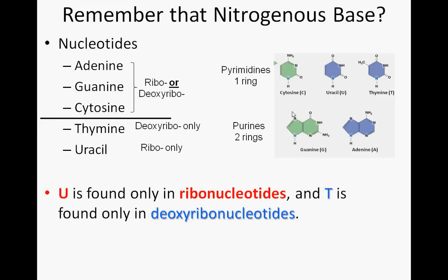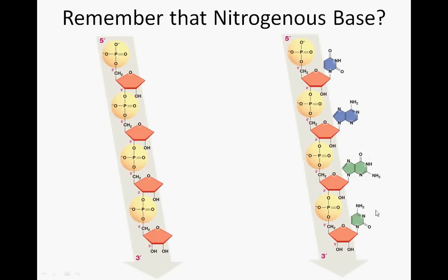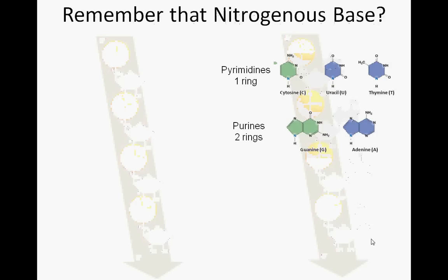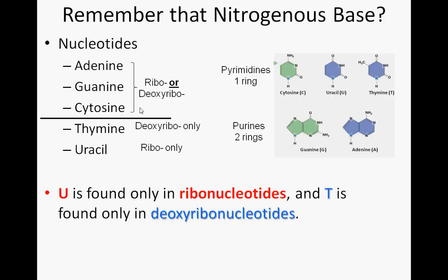Why are there three pyrimidines and two purines? Up on this slide we're seeing only four different things, and you may know that nucleic acids tend to be made up of four different bases — yet we're talking about five. The difference comes down to these two. Adenine, guanine, and cytosine can be either ribonucleotides or deoxyribonucleotides — they can attach to either ribose or deoxyribose, so you can find adenine, guanine, or cytosine in both DNA and RNA molecules.